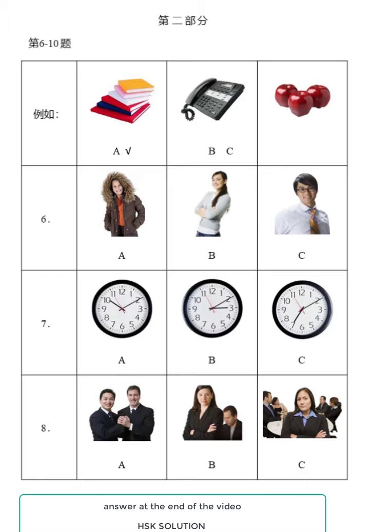五：下雨了。下雨了。第二部分，一共五个题，每题听两次。例如：这是我的书。这是我的书。现在开始第六题。六：今天天气很冷。今天天气很冷。